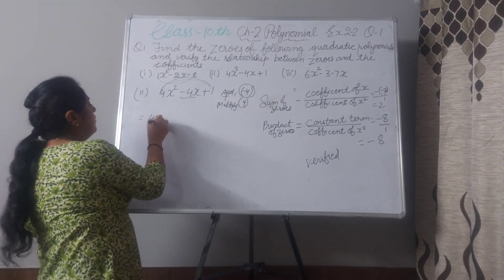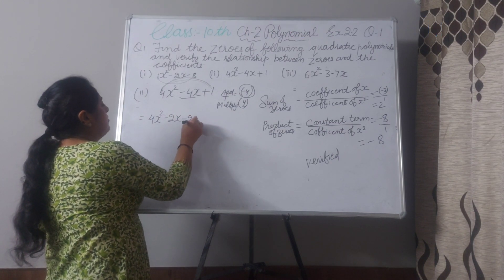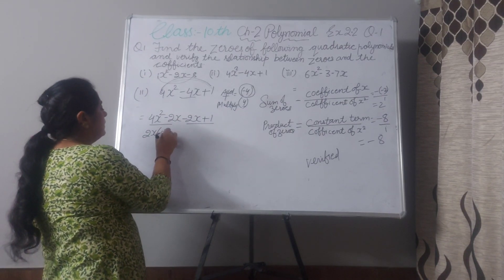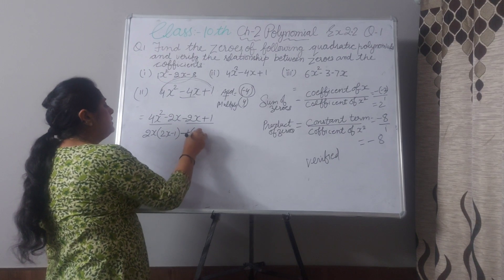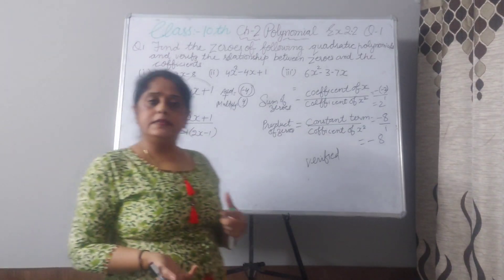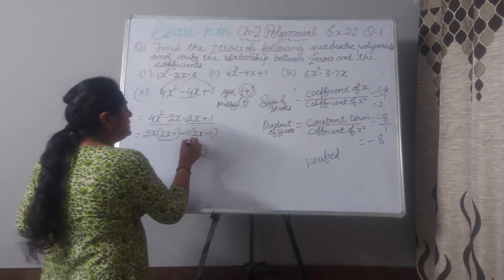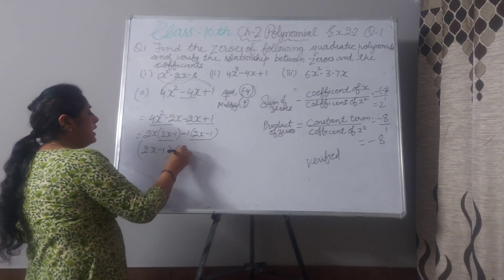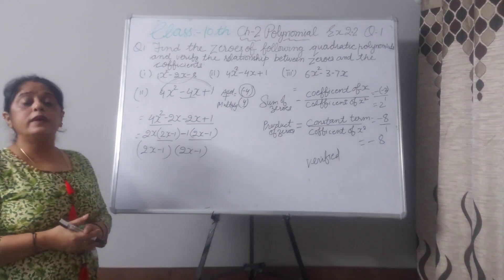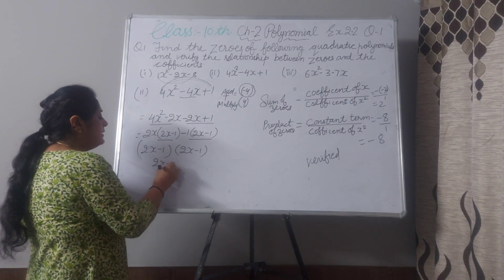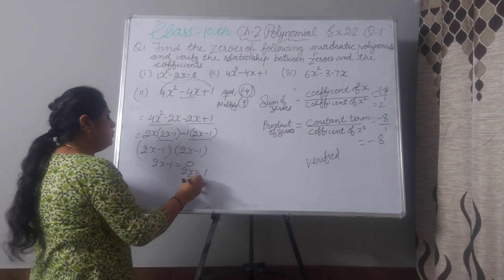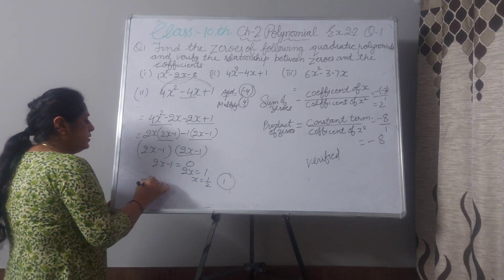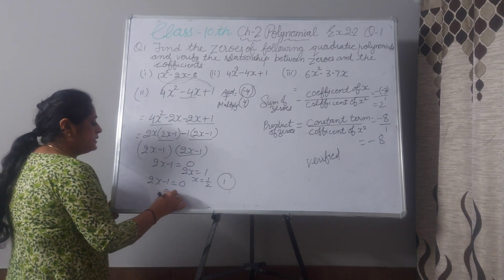Split the middle term: 4x² minus 2x minus 2x plus 1. Make pairs. Take 2x as common — giving 2x minus 1. Take minus 1 as common — internally sign will change — giving 2x minus 1. Now 2x minus 1 is common to both. Take 2x minus 1 outside — internally 2x minus 1 is left — or we can say (2x minus 1)². Setting 2x minus 1 equal to 0 gives x equals 1/2.